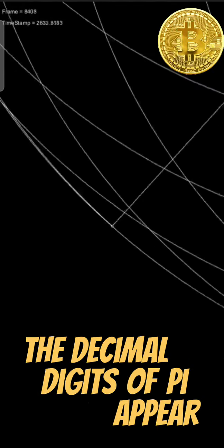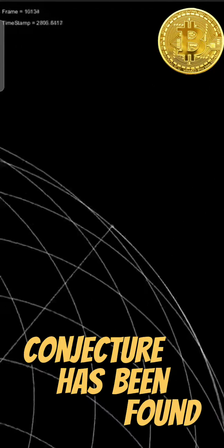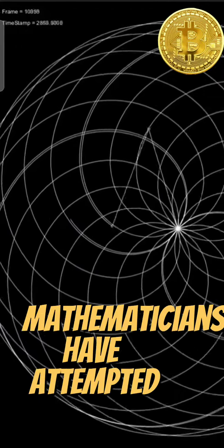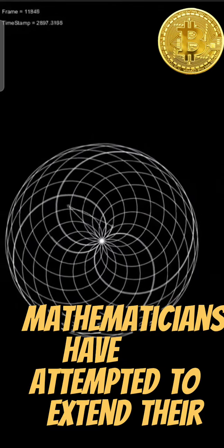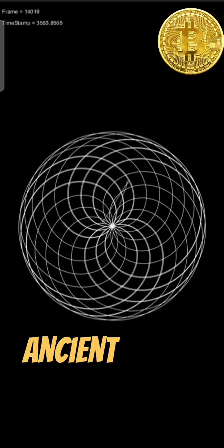The decimal digits of pi appear to be randomly distributed, but no proof of this conjecture has been found. For thousands of years, mathematicians have attempted to extend their understanding of pi, sometimes by computing its value to a high degree of accuracy.